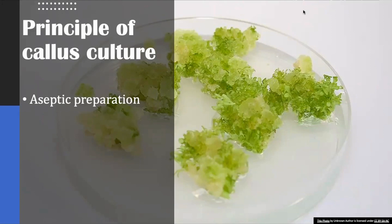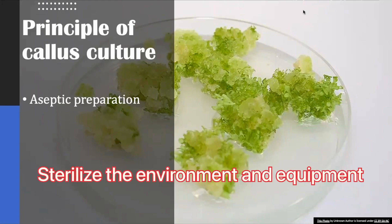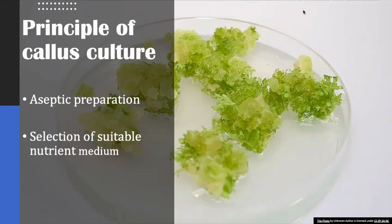We need to surface-sterilize the explant, sterilize the environment, and sterilize the equipment we are going to use. The next factor is the selection of suitable nutrient media. We need to consider the ratio of auxin and cytokinin required for callus induction, whether it requires cytokinin or whether it can only form a callus with the help of 2,4-D, which is an analog of auxin. Generally, MS media is used, but if you are looking for a specialized kind of callus, you may need to use other types of nutrients and media as well.